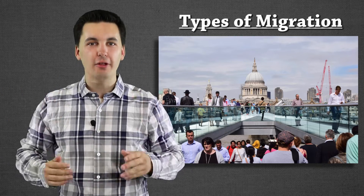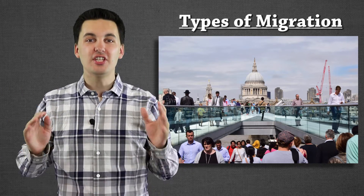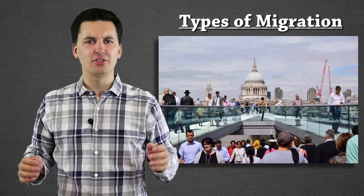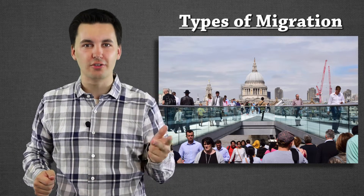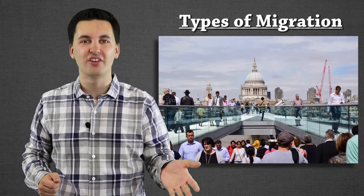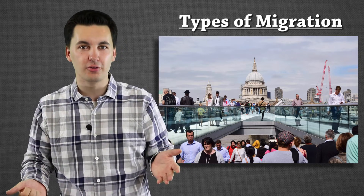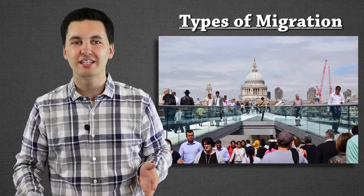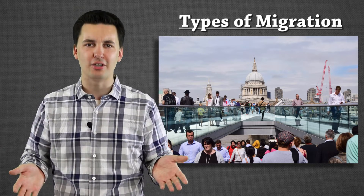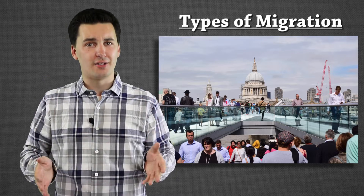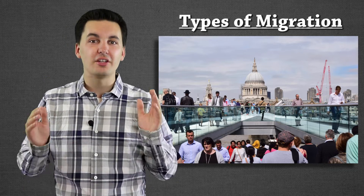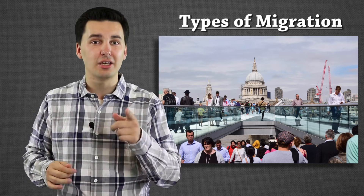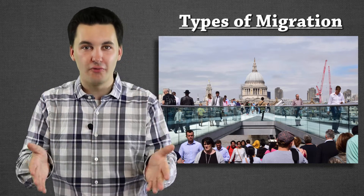Hello everybody and welcome to the Mr. Sin channel. Today we're going to be talking about a ton of different types of migration: chain migration, voluntary migration, forced migration, transnational migration, transhumance migration, inter-regional migration, intra-regional migration, guest workers, and step migration. That is a lot of different things, so let's stop wasting time and get into the actual video.